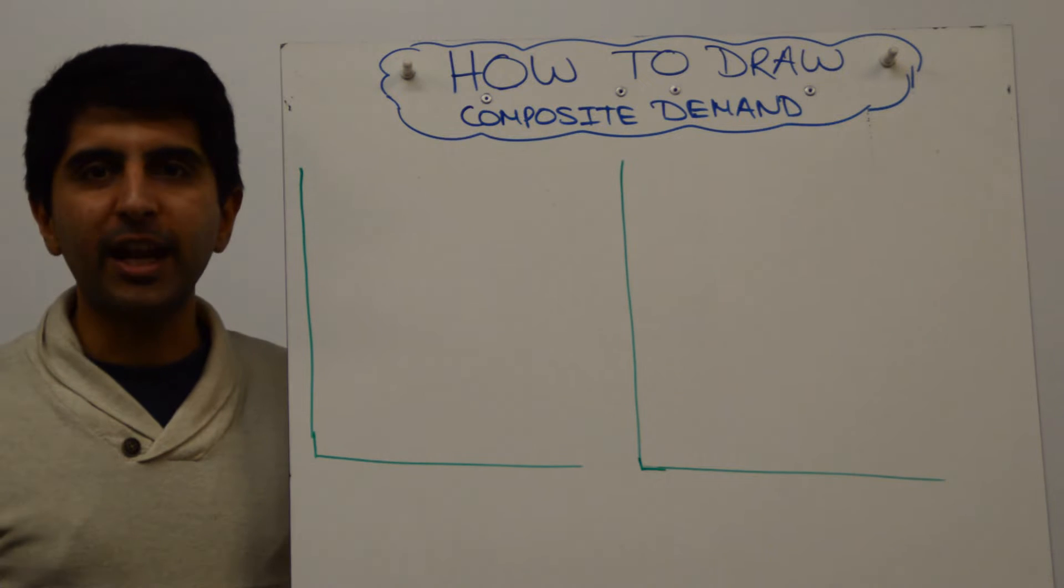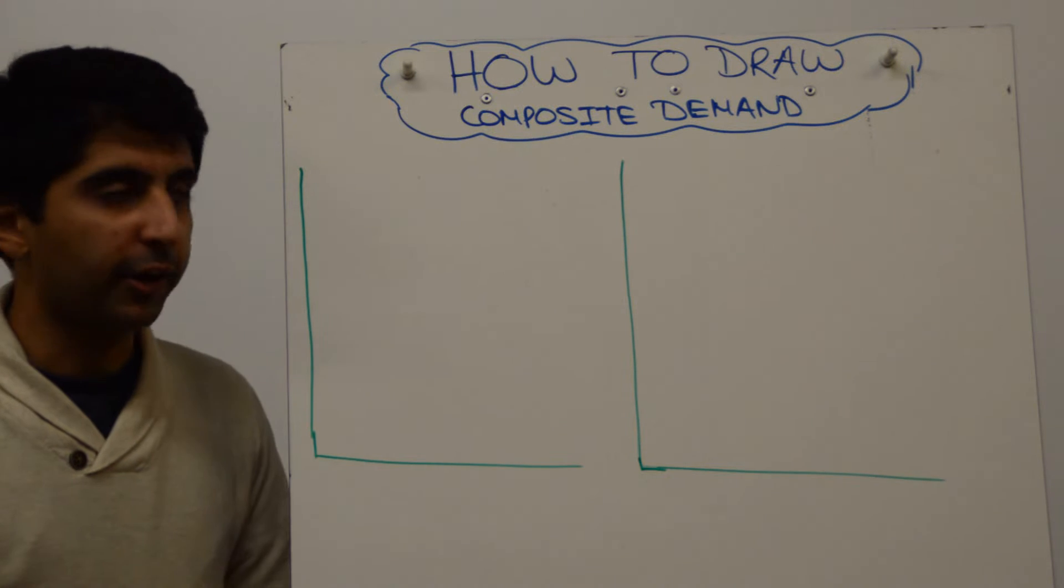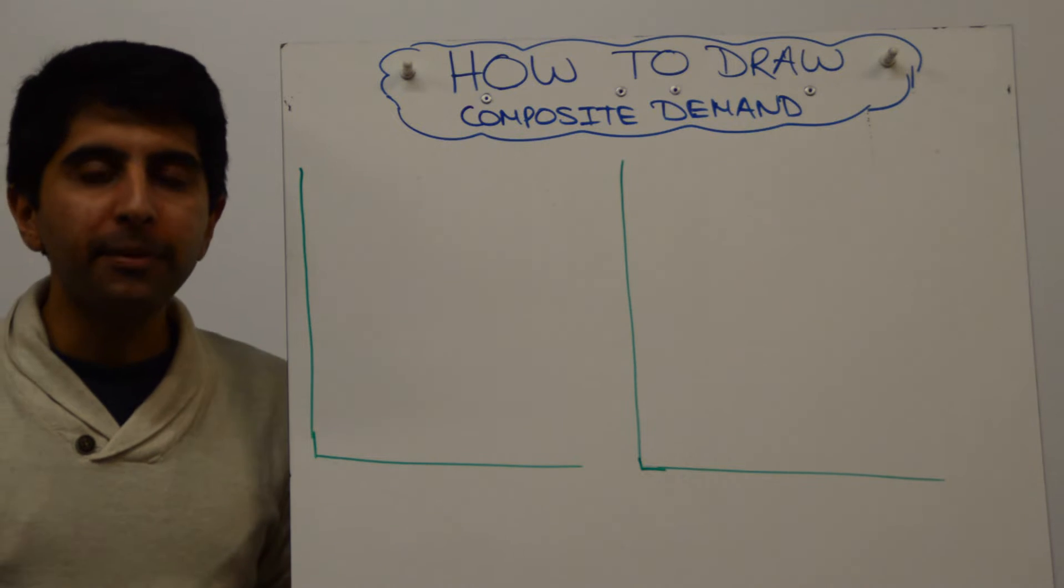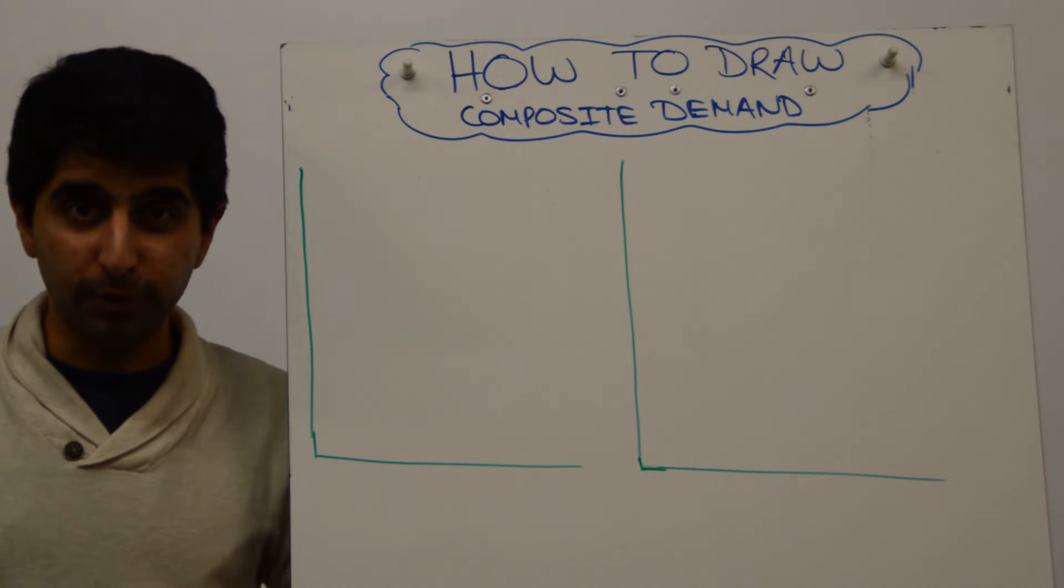Hi everybody! How do you show your understanding of composite demand on diagrams? Let's understand what composite demand means first. A good is said to be in composite demand when it has multiple uses.